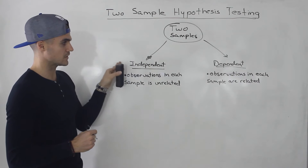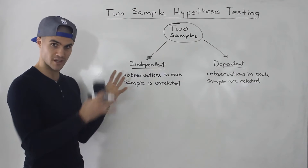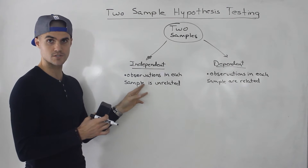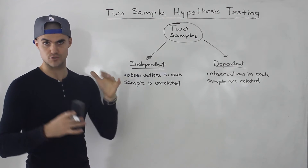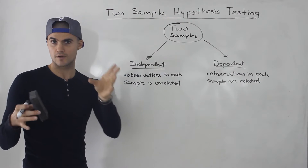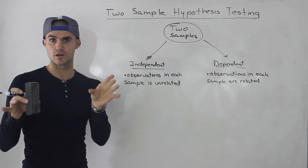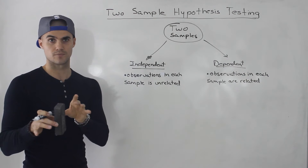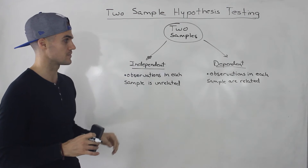The difference between independent and dependent samples: with independent samples, the observations in both are unrelated. An example is the two-store scenario — the customers sampled from each store are unrelated to each other, so that would be an example of independent samples.